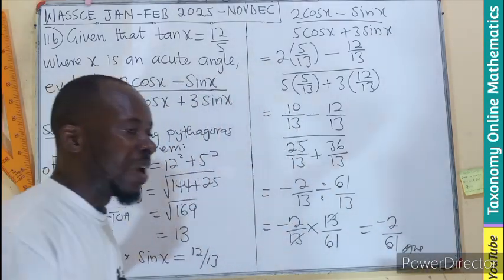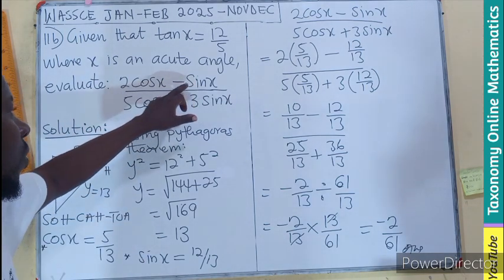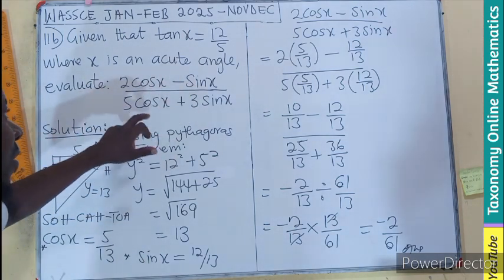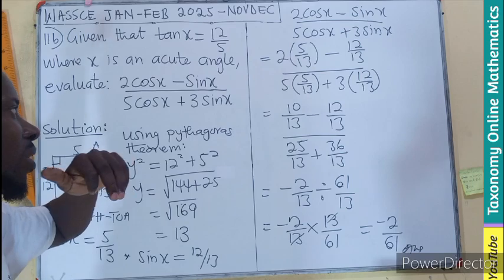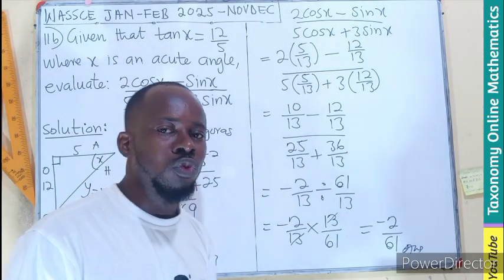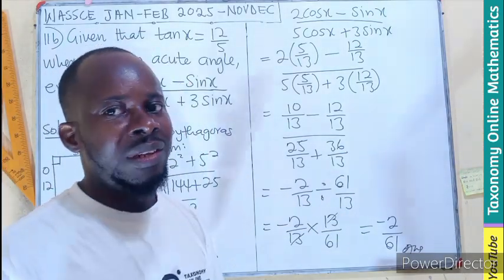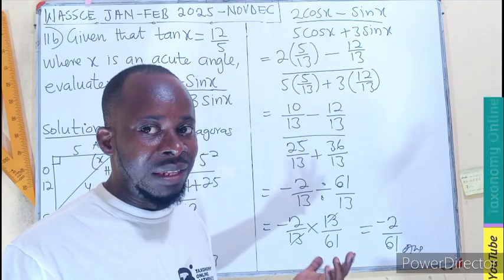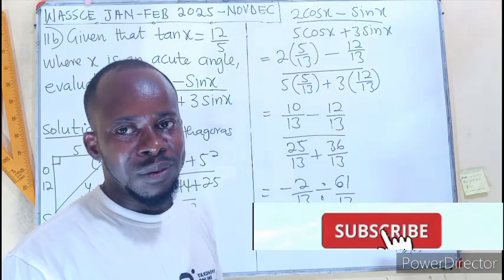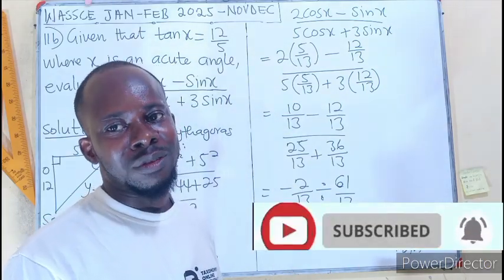So the value of 2 cos x minus sin x divided by 5 cos x plus 3 sin x will be negative 2 on 61. This is a quick one from the application of trigonometry. Like the video, share, comment, and subscribe.